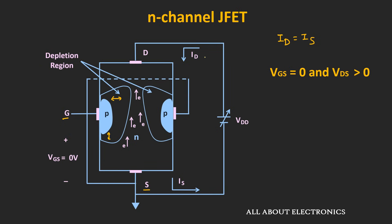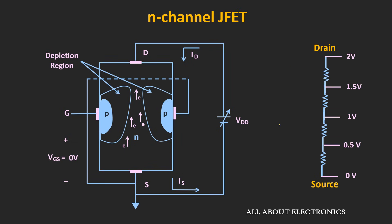During operation, this N-channel acts like a resistor. The N-channel can be modeled as a series of distributed resistors between the drain and source terminal. Whenever the drain current Id flows, there will be a voltage drop across each resistor. Let's say the voltage at the top end is 2V; as we move towards the source terminal, there will be a voltage drop across each resistor. Due to that, the upper region of the P-type material will be more reverse biased compared to the lower region, causing the depletion region to be wider at the top and narrower at the bottom.